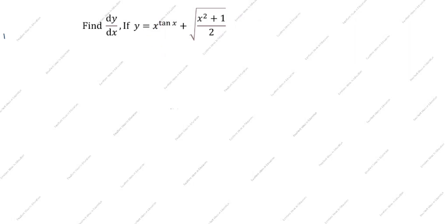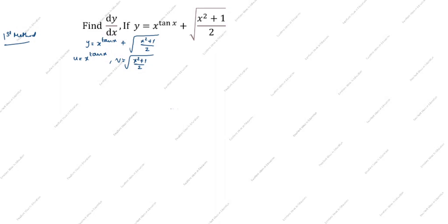This is the first method. y is equal to x power tan x plus root of (x squared plus 1) divided by 2. Let u equal x power tan x, and v equal root of (x squared plus 1) divided by 2. So y equals u plus v. Differentiating: dy/dx equals du/dx plus dv/dx.